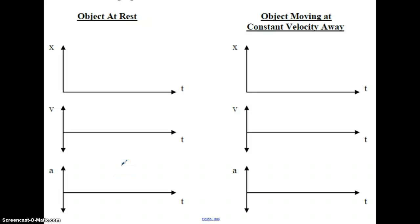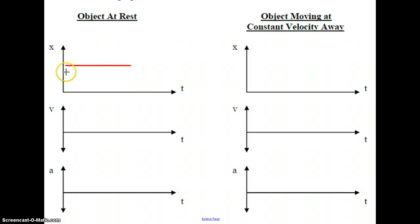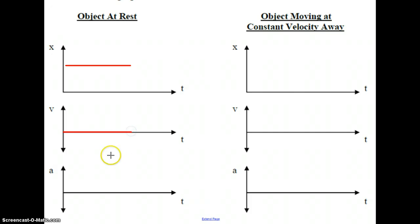For an object at rest, if an object is just standing there, its position wouldn't be changing. As time goes forward, the distance is not getting bigger or smaller as time progresses. If an object is at rest, its velocity is zero, so we would have a VT graph with a horizontal straight line on the time axis. If there's no velocity, there's no acceleration, so we also have a zero AT graph — a horizontal line on the time axis.